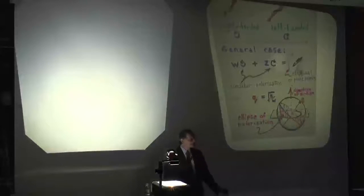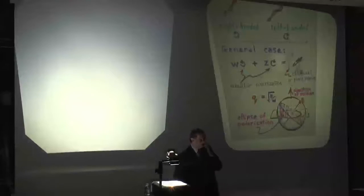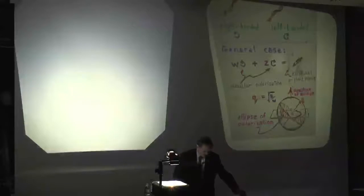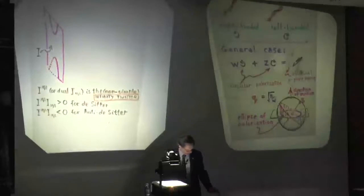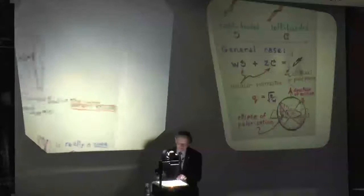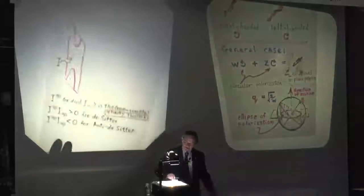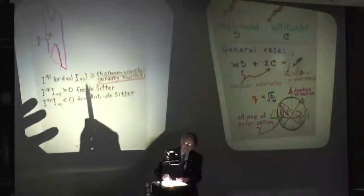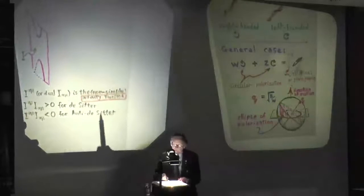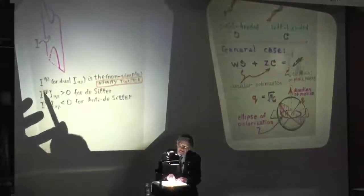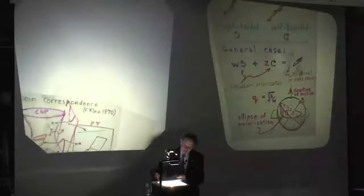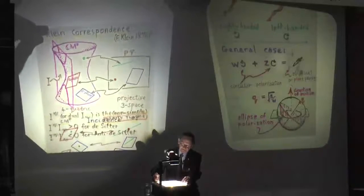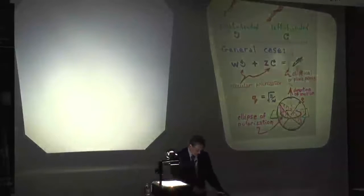One point: there is the cosmological constant, which we now believe is there. If you have a cosmological constant, it slightly changes this picture. This quantity has a contraction with itself which is zero in the flat case, and it's non-zero in the more general case when there's a cosmological constant. The cosmological constant comes in there as this number. I'll just show you that in that case, infinity looks a bit different.